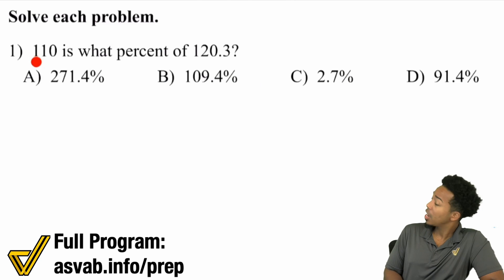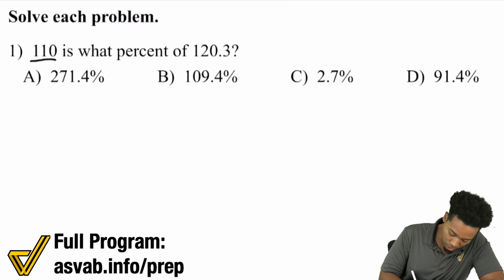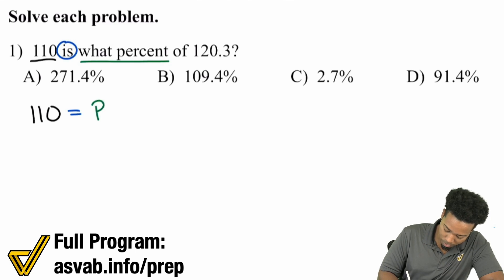This problem says 110 is what percent of 120.3? Here's exactly what you're going to do, my math party people. First, you need to see what it looks like. So 110, the word 'is' means equals, then it says what percent, so I'll say percent, and 'of' means times 120.3.